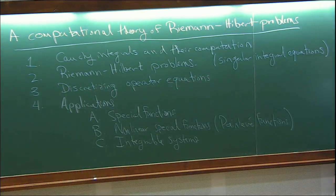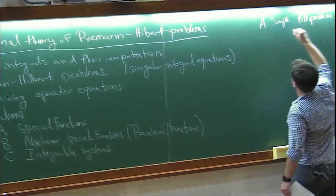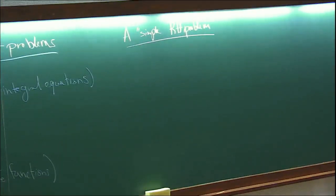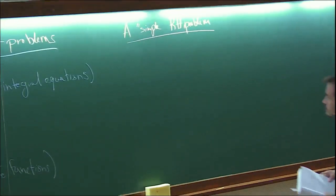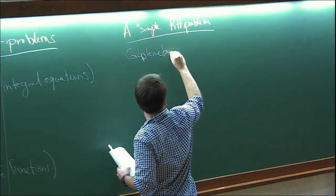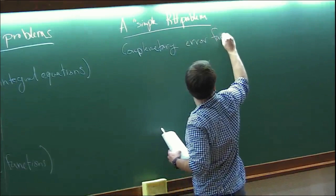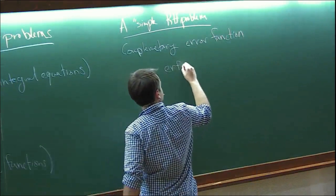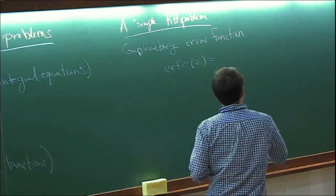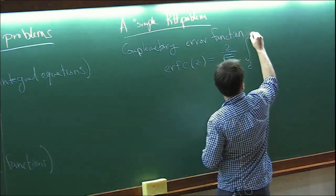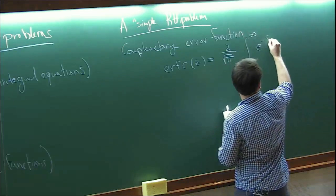I'll first talk about a simple Riemann-Hilbert problem. I'll talk about the complementary error function, erfc(z), which is defined as (2/√π) times the integral from z to plus infinity of e^{−s²} ds.